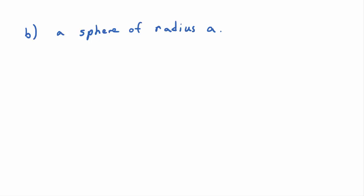What if we wanted to parametrize the full sphere, which is not a function? It wouldn't pass a vertical line test in space. The Cartesian equation of a sphere of radius A centered at the origin is X² + Y² + Z² = A². If we solve for Z and want both the upper and lower hemispheres, we'd need both positive and negative square roots — so we need a different technique.